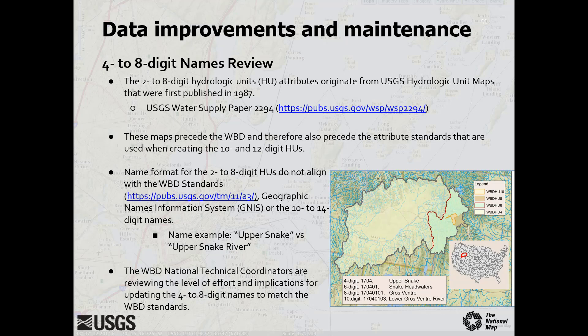WBD names are another maintenance task. A review and revision of the names for the 4-, 6-, and 8-digit hydrologic units is underway. The 2- to 8-digit hydrologic unit attributes originate from the USGS hydrologic unit maps that were first published in 1987. These maps precede the WBD and therefore also precede the guidance now used for naming hydrologic units. The current name format for the 2- to 8-digit units does not align with the WBD standards, Geographic Names Information System, or the 10- to 14-digit names.